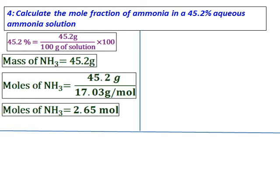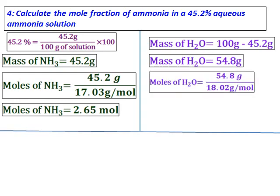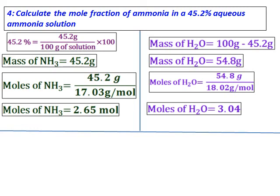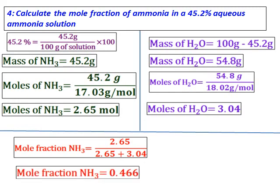After getting the moles of ammonia, calculate the moles of water. Mass of water equals mass of solution minus mass of solute, so mass of water is 54.8 grams. Using the molar mass of water, calculate the moles of water. Now I have the moles of ammonia and moles of water. Mole fraction of ammonia equals moles of ammonia divided by total moles, and I get a mole fraction of 0.466.